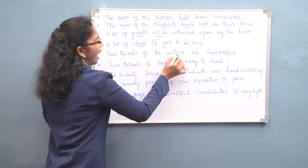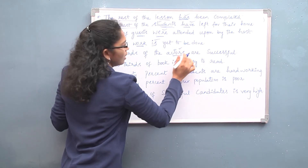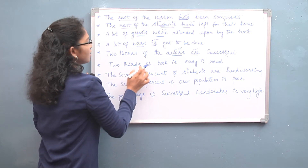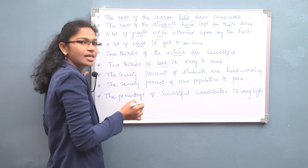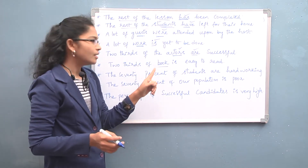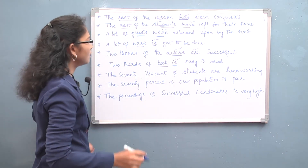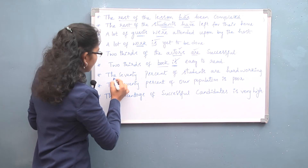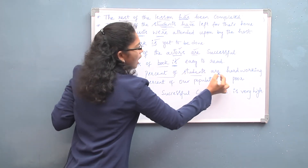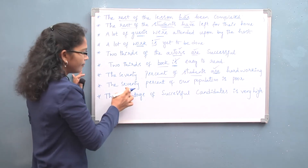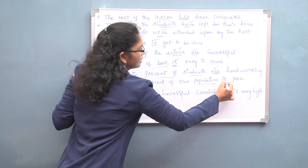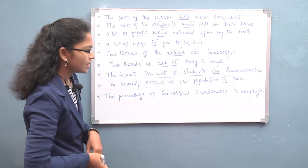'Two-thirds of the actors are successful' — actors is countable plural, so 'are'. 'Two-thirds of the book is easy to read' — book is singular here, so 'is'. 'The 70% of students are hardworking' — students is plural. 'The 70% of our population is poor' — population is a singular noun, so we use the singular verb 'is'.